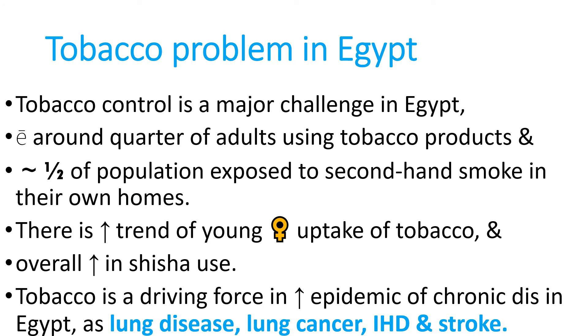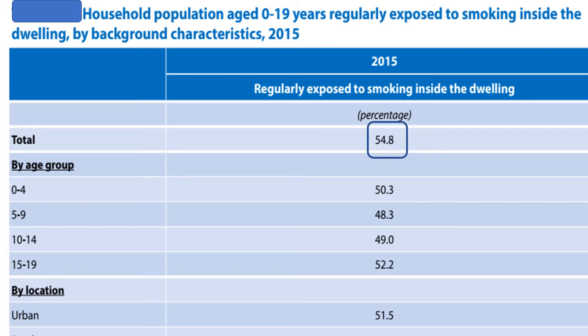Tobacco problem in Egypt: tobacco control is a major challenge, with around a quarter of adults using tobacco products. About half of the population is exposed to second-hand smoke in their own homes. There is an increased trend of young females taking up tobacco, and an overall increase in shisha use among both females and males. More than half of the household age group 0 to 19 years is regularly exposed to smoking inside the dwelling.